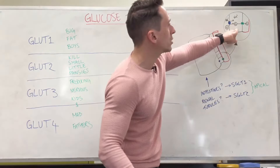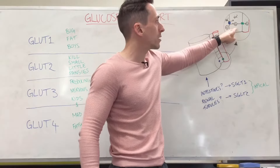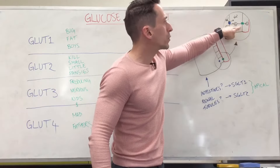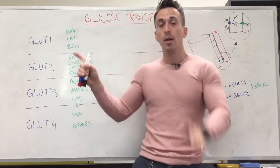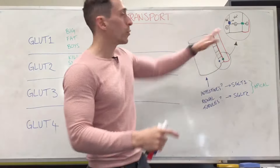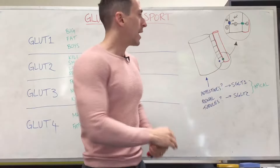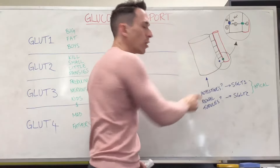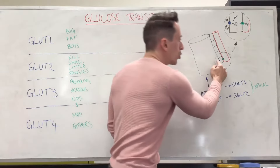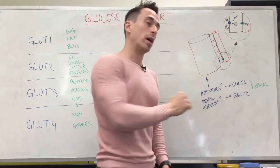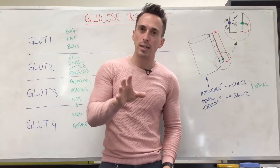Once the glucose is inside that cell, it needs to go from inside the cell into the blood, and it moves through another transporter — a GLUT transporter. Specifically for the small intestines, it's GLUT-2. Now there's another hollow tube that glucose moves through and needs to traverse two membranes to go back into the bloodstream — and this is the kidneys.